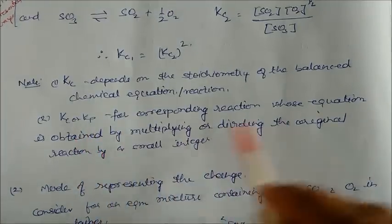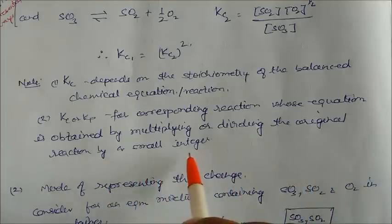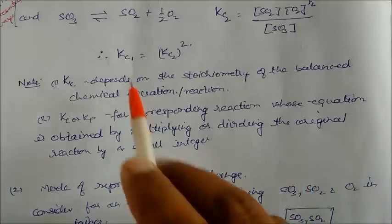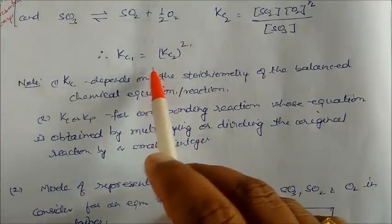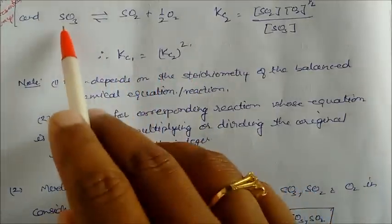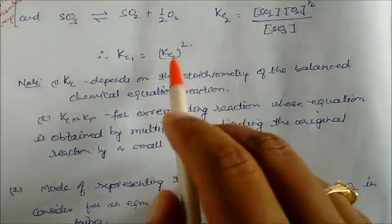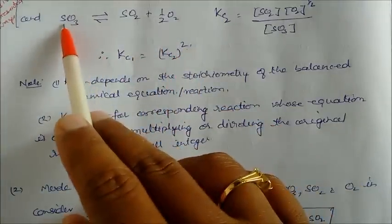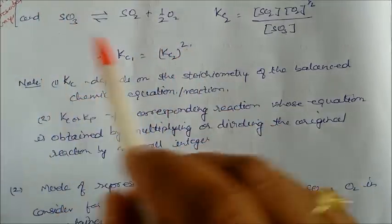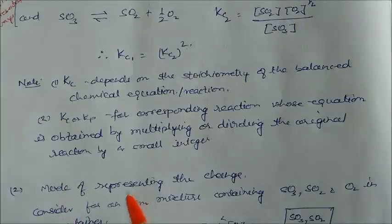Kc or Kp for corresponding reactions is obtained by multiplying or dividing the original reaction by small integers. If you multiply the reaction, you take the square; if you divide, you take the square root. This is how the equilibrium constant changes with stoichiometric manipulation.